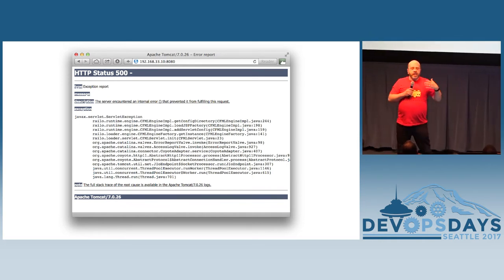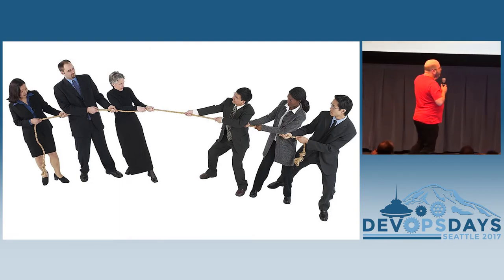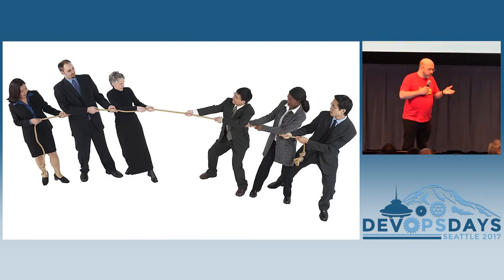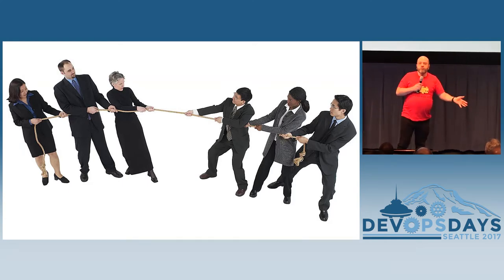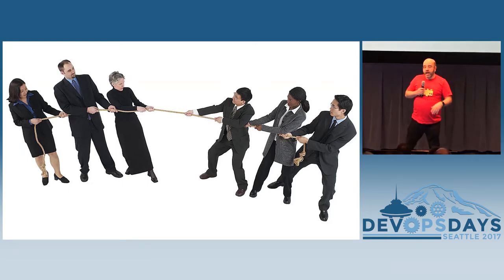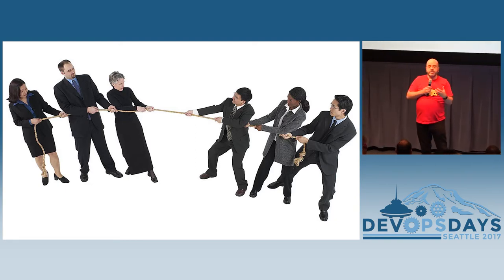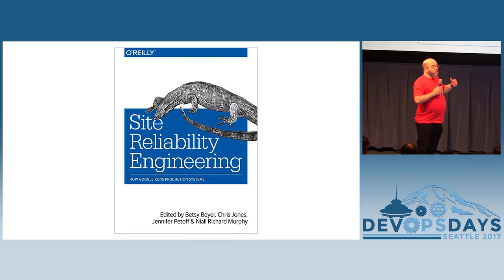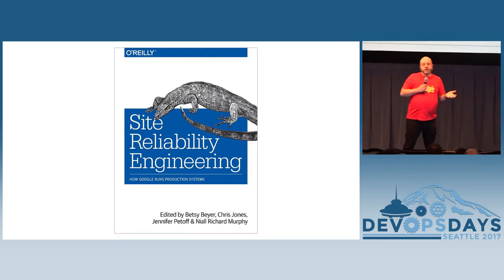So back in about 2003, Ben Treanor started to deal with this particular tug of war — on one hand, you have developers whose whole job it is to make things with features and iterate. And then on the other side, you have the operations folks who would really like things to stay stable and reliable. So they came up with the notion of site reliability engineering.